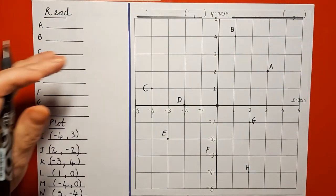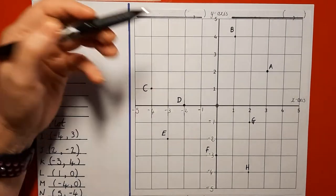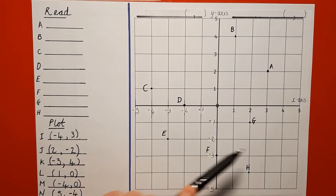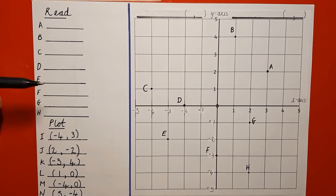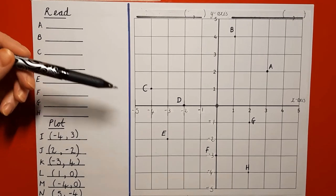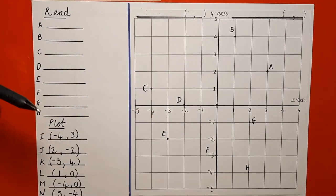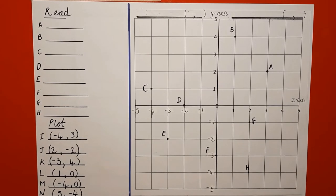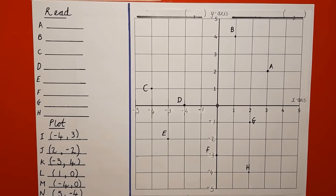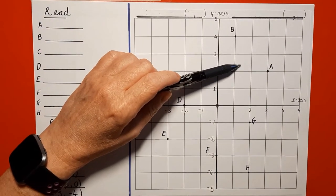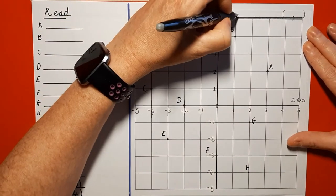Our coordinates grid is now divided into four sections — these are what we call our four quadrants. Quad means four — think of a quadrilateral, a four-sided 2D shape, or a quad bike with four wheels. The quadrant you learned about in Year 4 is this one here, and it's called the first quadrant. Moving around anti-clockwise, here we have the second quadrant.